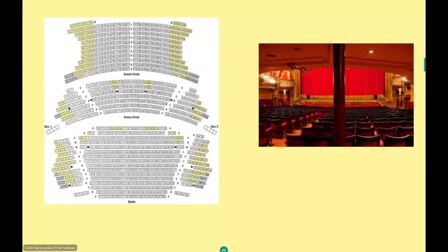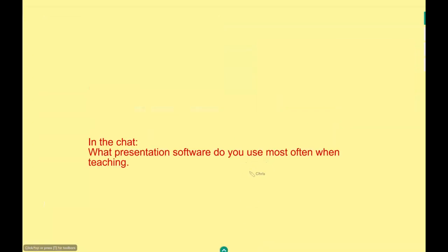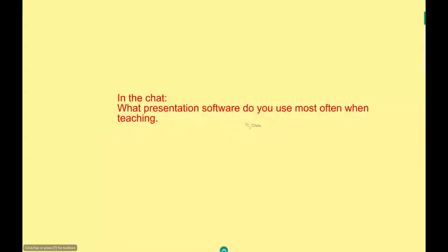Here is a seating plan for the Grand Theatre in Wolverhampton. All the highlighted seats are restricted views and come with upwards of 30% discount in ticket price. Theatres realise that if you've got a restricted view, you deserve a discount — it's a disadvantage. What do we do in teaching? In teaching, we sometimes obstruct the view by standing in front. Could you tell me in the chat what presentation software you mostly use when teaching?